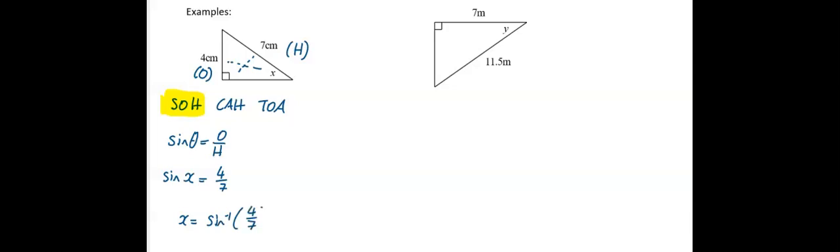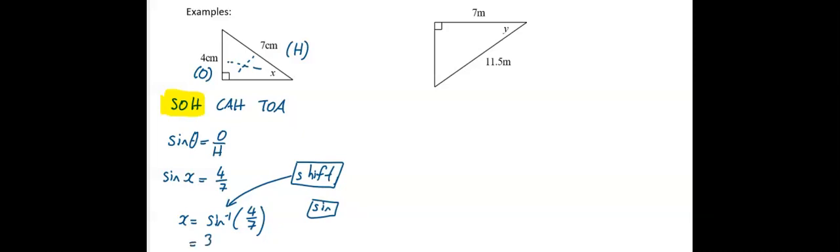When sine goes across it becomes sine to the minus one. To get sine to the minus one on your calculator, hit the shift button and then hit your sine button. Shift and sine gives you sine to the minus one. I hit shift and sine, it shows sine to the minus one with a bracket, then I enter four over seven, close the bracket, press equals, and x equals 34.85 degrees to two decimal places.